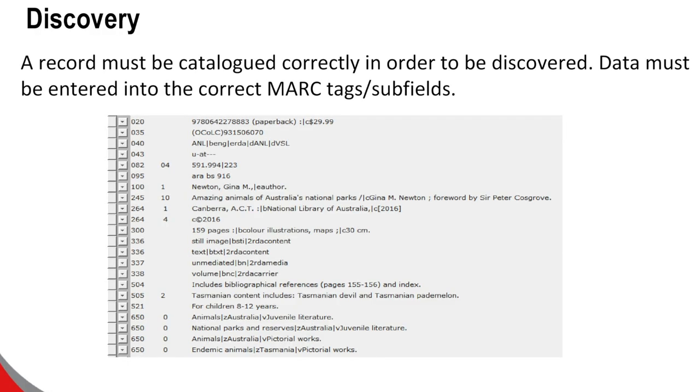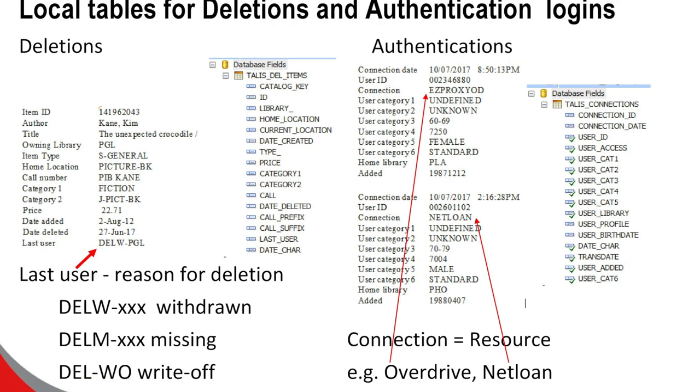I also discovered that when items are deleted in Symphony, surprisingly they're actually deleted — but it is the first library system we've had where that actually happens. Normally you keep part of that record for reporting and audit requirements. So we actually turned off item deletion in the staff client and created our own process, which meant staff issued the item to a special user to begin our process. The very last step copies that item to our own special table. With this example, Glenorchy deleted an item added in 2012 — a general picture book costing $22.71 — and the last user indicates the reason for the deletion.